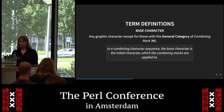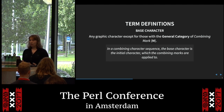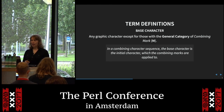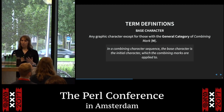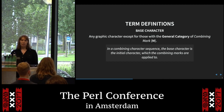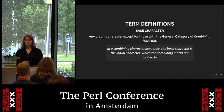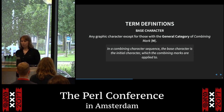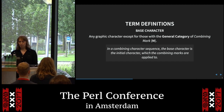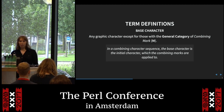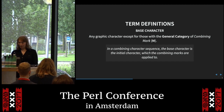A base character is like a plain A — you can attach accents and other marks to it. The two main types of characters in Unicode are base characters and non-combining mark characters. There are also control characters, which act like blocks of stuff.